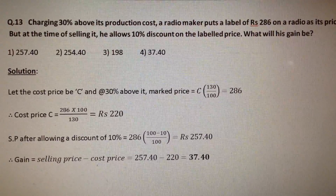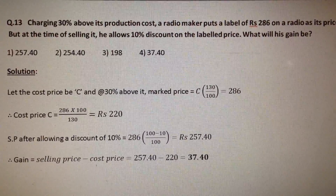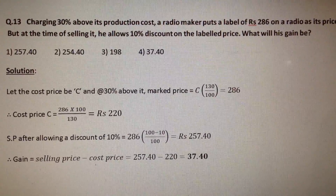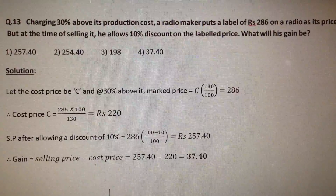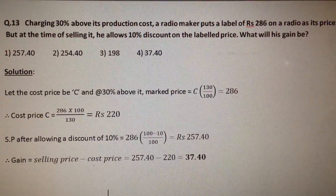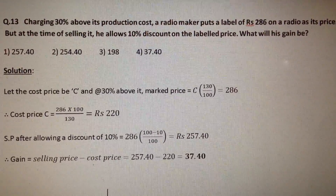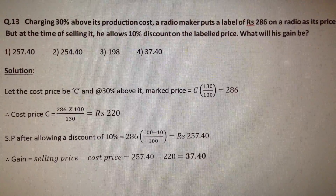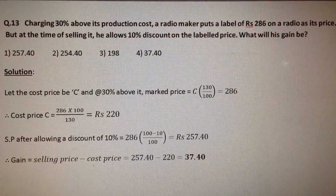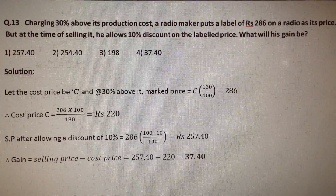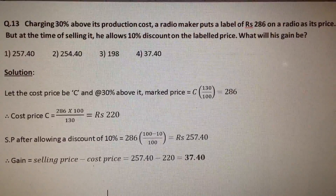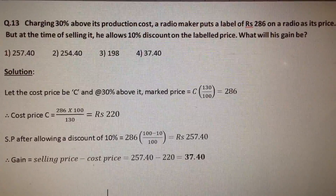Charging 30% above its production cost, a radio maker puts a label of Rs. 286 on a radio as its price. But at the time of selling it, he allows 10% discount on the label price. What will be his gain?